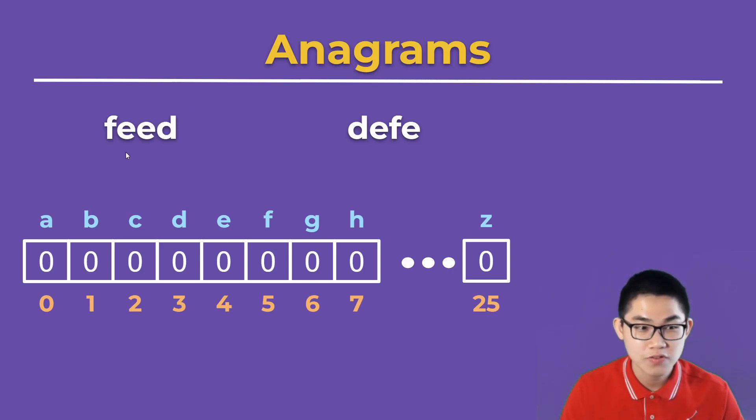After we created the array, we're going to go through the first word feed. Starting with F, we know that F is at index 5, so we increment by 1. How about E? Well, E is at 4, so we increment 0 to 1.